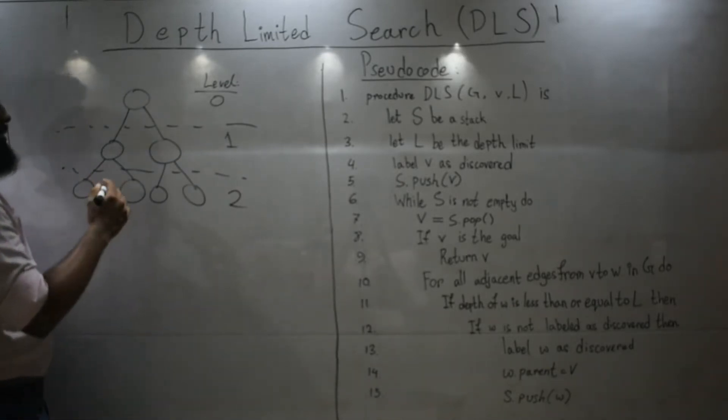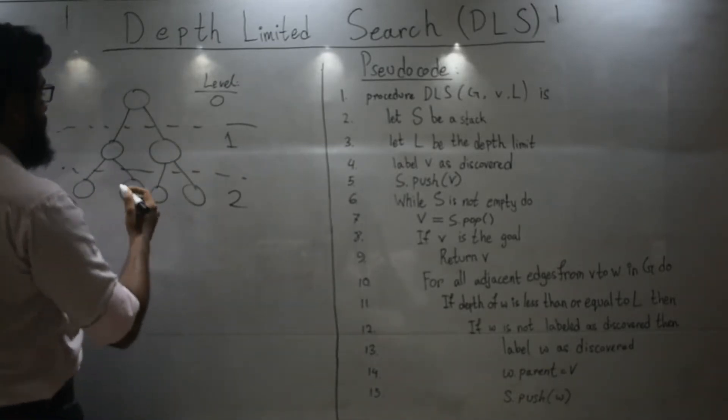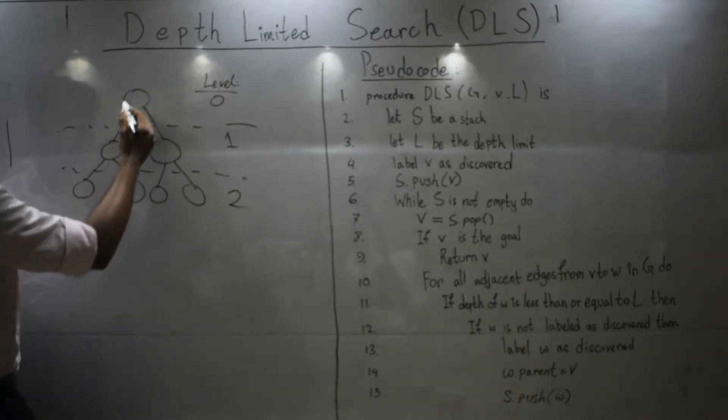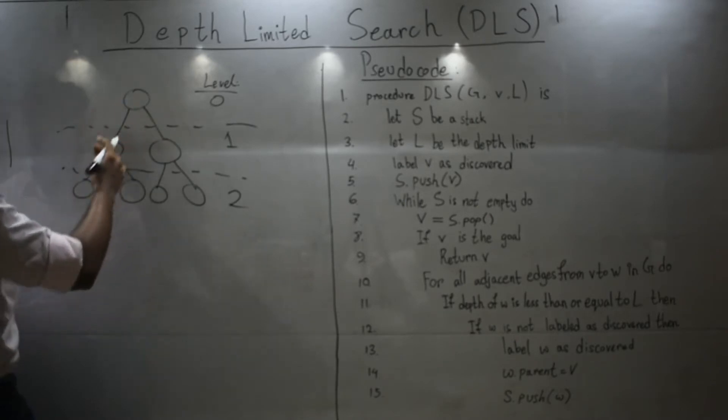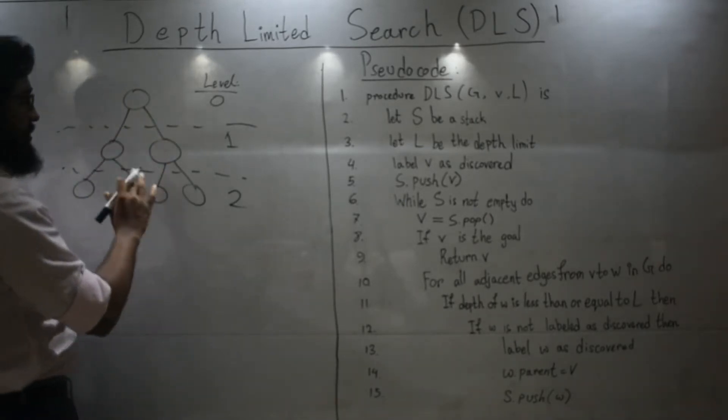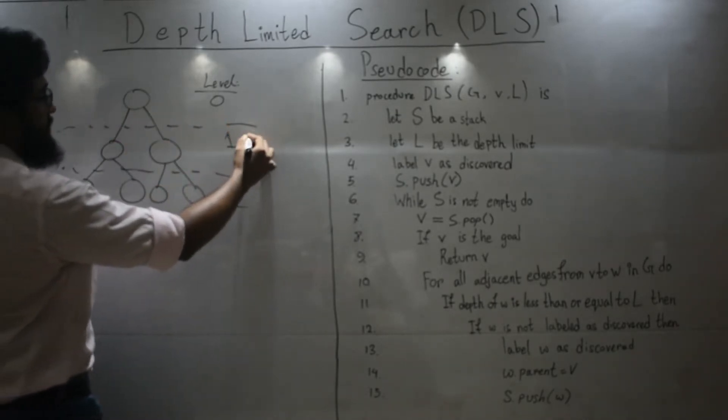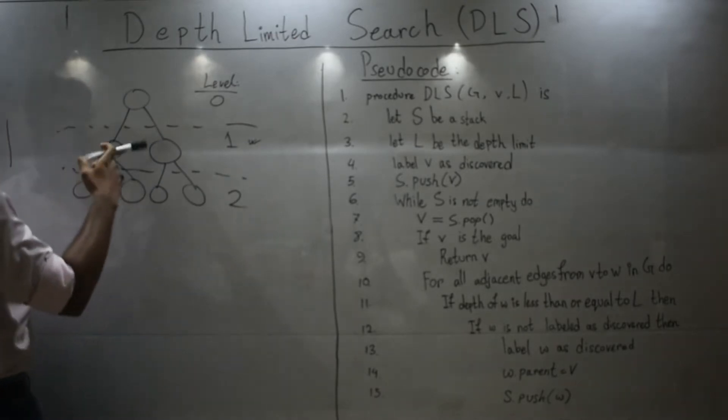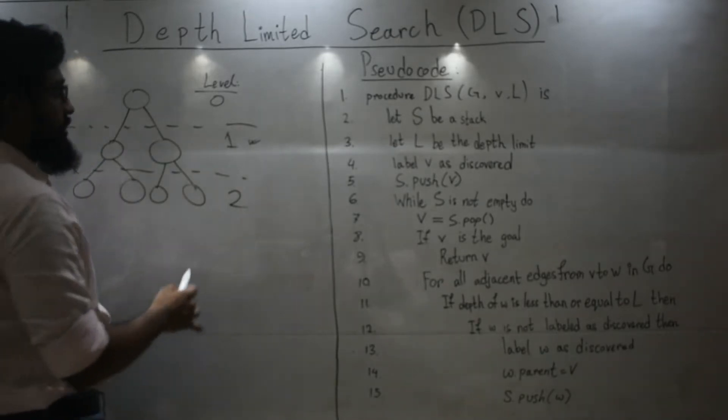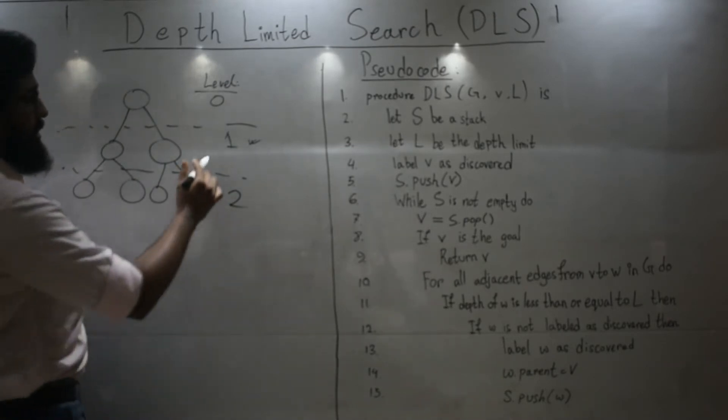So in depth first search, we usually traverse along the entire depth of our tree or graph. But in depth limited search, if suppose our limit is one, so after coming over here, we can no longer go and access these because their level is higher than our limit.